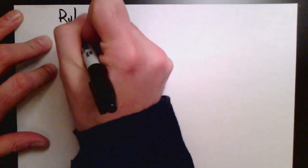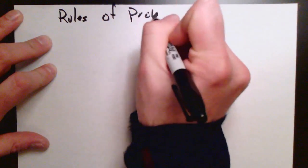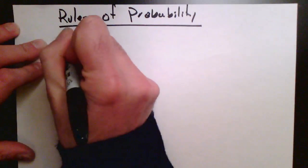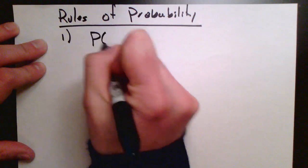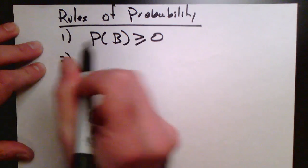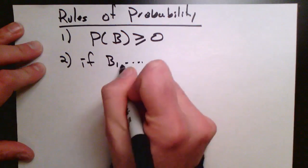We'll now write down the basic rules of probability. That is to say, the rules that govern the probabilities that we assign to a given event. So the first simple rule is that the probability of an event has to always be a positive number. It can't be negative.